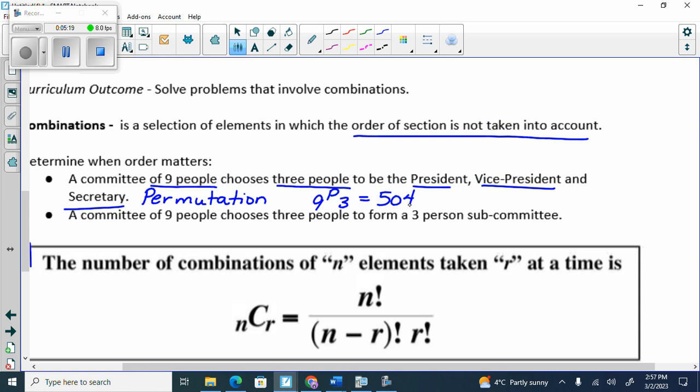Now the next one says I have a committee of nine people. Nothing changed. And I choose three people to form a three-person subcommittee. Did I give them jobs? If I pick them first, second, or third, is it any different? Or do they just get to be on the subcommittee? It's no different. If that second number, the R—like NPR and NCR on the formula sheet—if that second number that matters, so if I'm choosing three out of nine, the three, does it make any difference if you're picked first, second, or third? In this case, three-person subcommittee, you're on the committee or you're not. So this one is a combination.